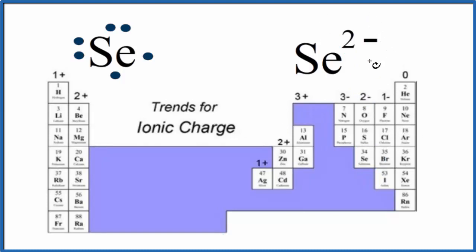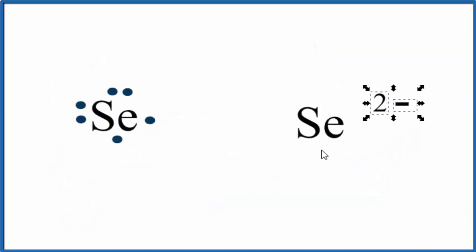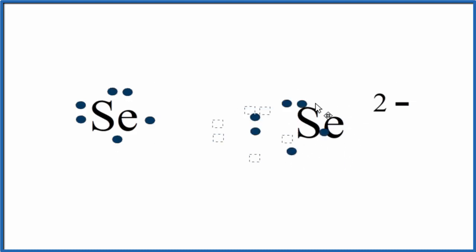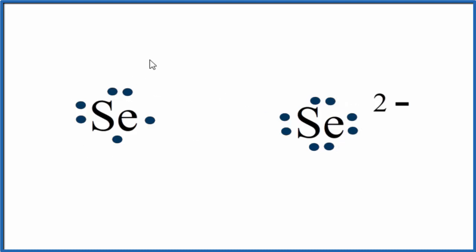That 2 minus means it has 2 extra electrons. So here's how we'll draw the Lewis structure — we'll just write the electron configuration for Se. This 2 minus means we have 2 extra negative charges, 2 extra electrons, so we're just going to add these to our Lewis structure. Now we have 8 valence electrons in this outer shell, the highest energy level. This is very stable, so that's why Se will gain 2 electrons to become the Se 2 minus ion.